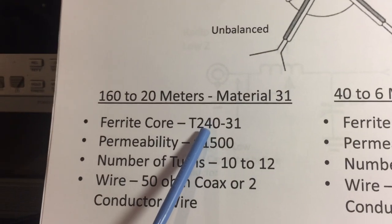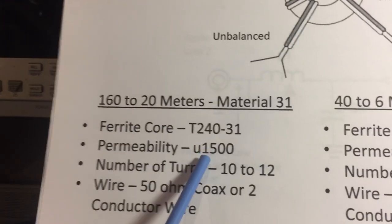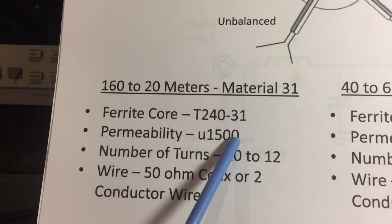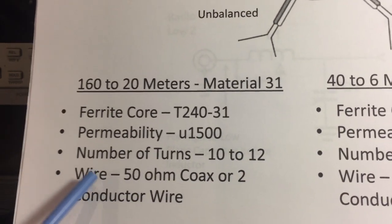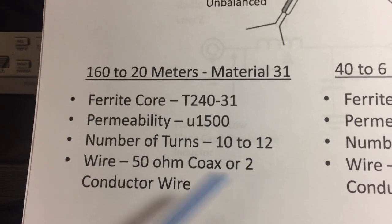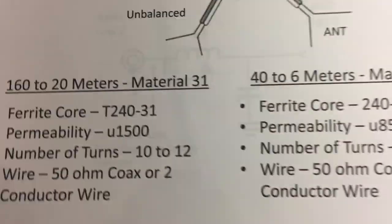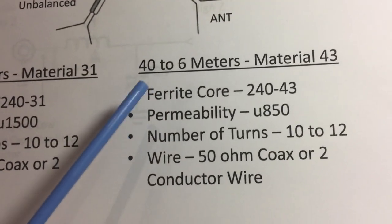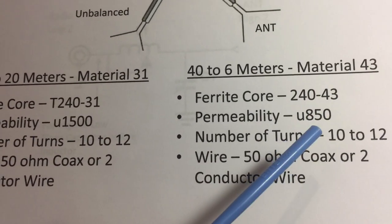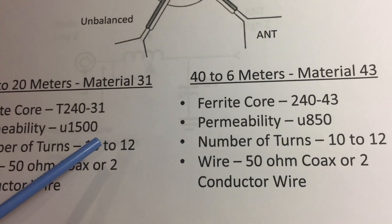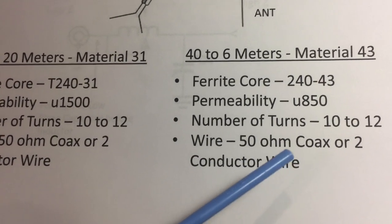Here's the core material. The T240 is 2.4 inches. Material 31 has higher permeability of 1500 so it has much higher impedance. Number of turns is 10 to 12, and we can use 50 ohm coax or two conductor wire depending on the application. Material 43 is also a T240 core with permeability of 850, much less, with the same number of turns and 50 ohm coax or two conductor wire.